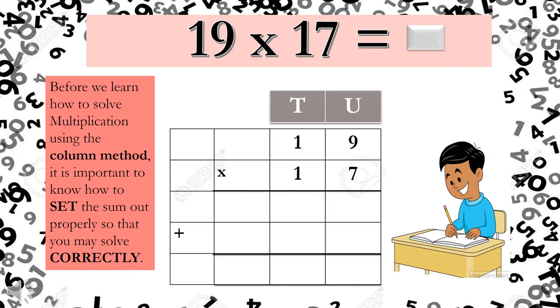Let's begin. Here we have the sum 19 times 17 equals placeholder. Remember the placeholder is there to show you that you need to solve and find the answer. But before we learn how to solve multiplication using the column method, it is important to know how to set the sum out properly so that you may solve correctly.